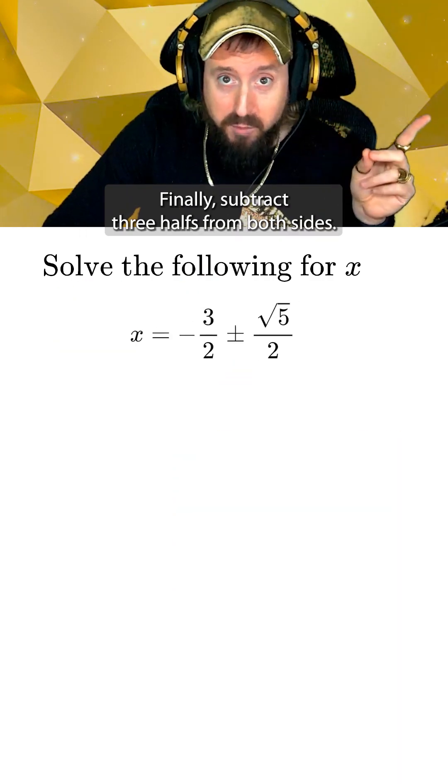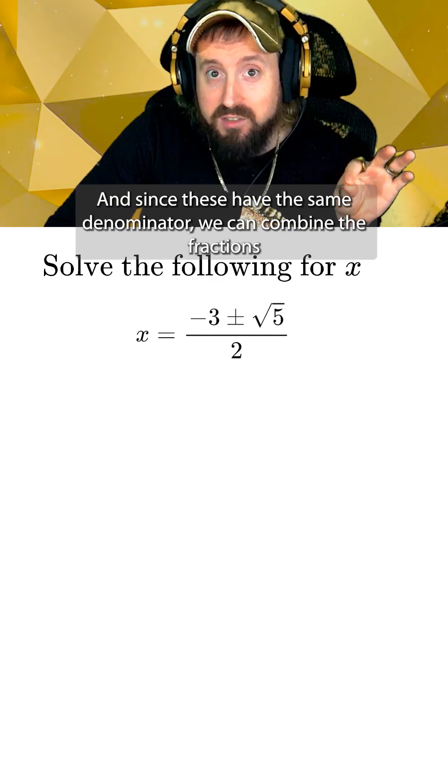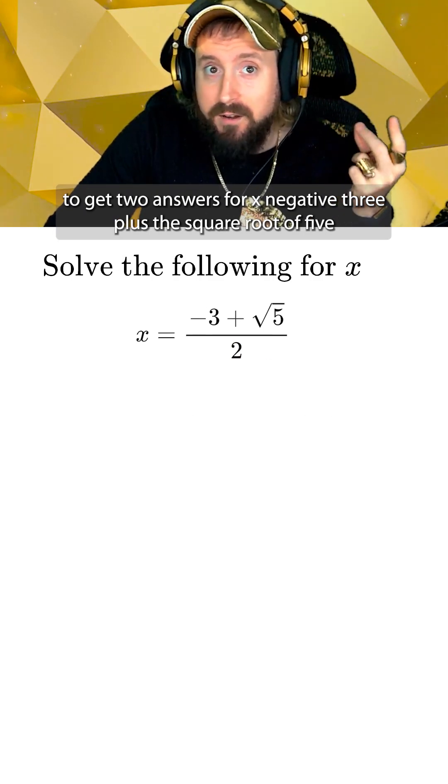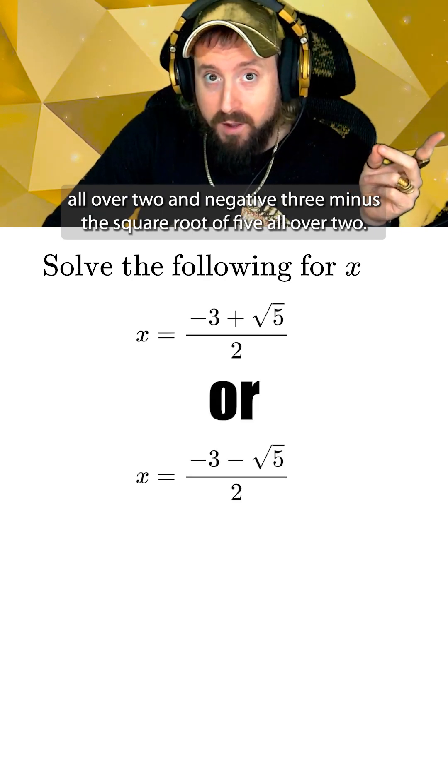Finally subtract three halves from both sides and since these have the same denominator we can combine the fractions to get two answers for x: negative three plus the square root of five all over two and negative three minus the square root of five all over two.